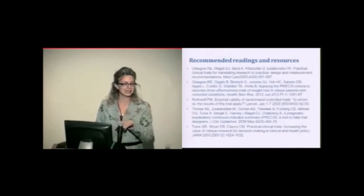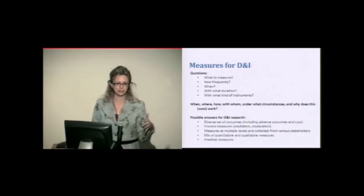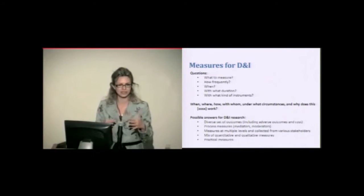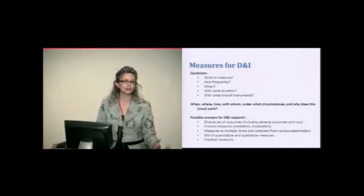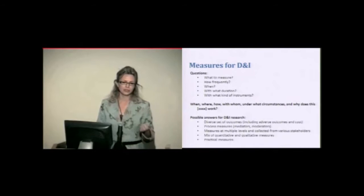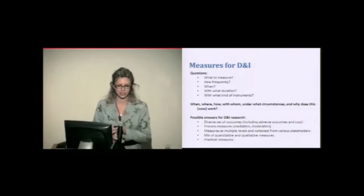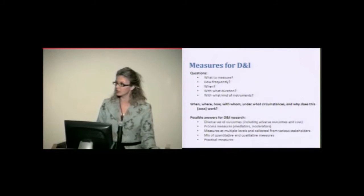And here are some readings that you will find online about design. I'm briefly going to talk about measurement now. Again, thinking about the main research question that we have in DNI of when, where, how, with whom, under what circumstances, and why does something work. We also want to be thoughtful about what kind of measures we need to collect. Usually, we think about what to measure, how frequently, when, with what duration. And finally, I would like to add that with what kind of instruments. This is going to be a key component of DNI research. The characteristics of the instruments are the meta-information about the instruments.